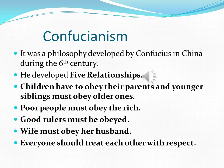Confucianism was a philosophy developed by Confucius in China during the 6th century. He developed five relationships. Children have to obey their parents, and younger siblings must obey older ones. Poor people must obey the rich. Good rulers must be obeyed. A wife must obey her husband. And everyone should treat each other with respect.